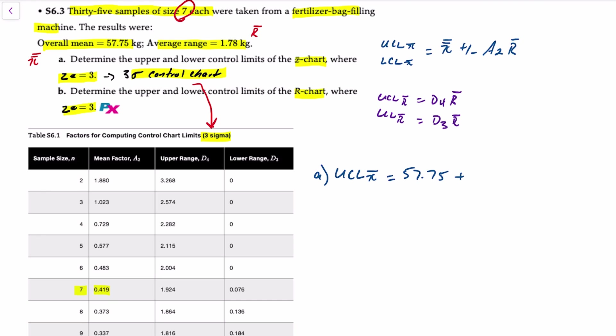So we'll add 0.419 and then multiply that by our range of 1.78 kilograms, which gives us an upper control limit of 58.496. For the lower control limit that's 57.75 minus 0.419 times 1.78, which gives us 57.004.